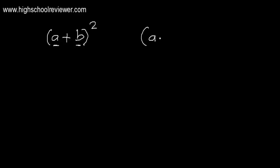Special products: square of a binomial. Let's have an example — the quantity of a plus b raised to the power of two. This is a binomial because it is composed of two terms: term a is the first term and b is the second term. We can also have a minus b raised to the power of two. The terms here are called variables, so we may use any letters or variables to represent our equation.